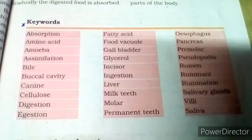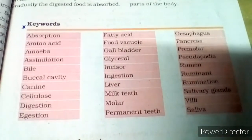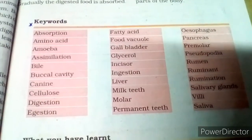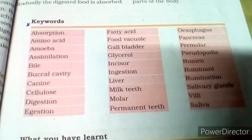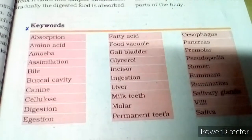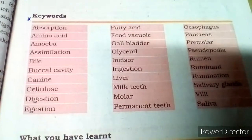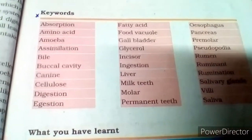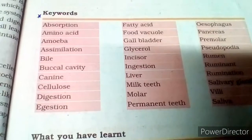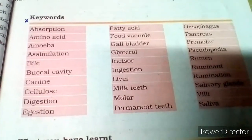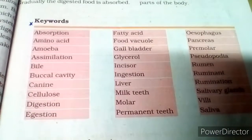I hope you understood the lesson. Now some key words: absorption, amino acid, amoeba, assimilation, bile, oral cavity, canine, cellulose, digestion, egestion, fatty acid, food vacuole, gallbladder, incisor, ingestion, liver, milk teeth, molar, permanent teeth, esophagus, pancreas, premolar, pseudopodia, rumen, ruminant, rumination, saliva, and villus.